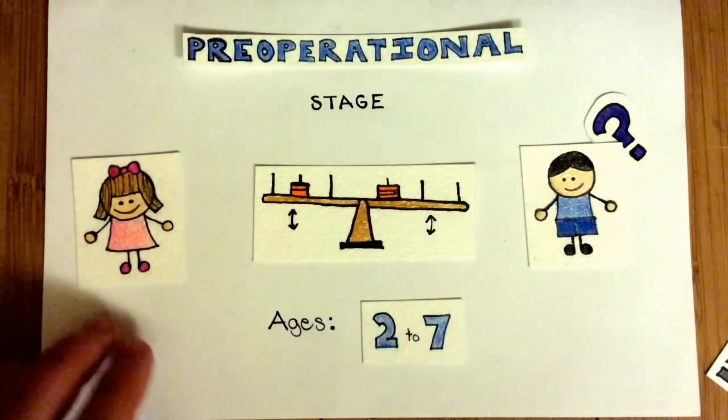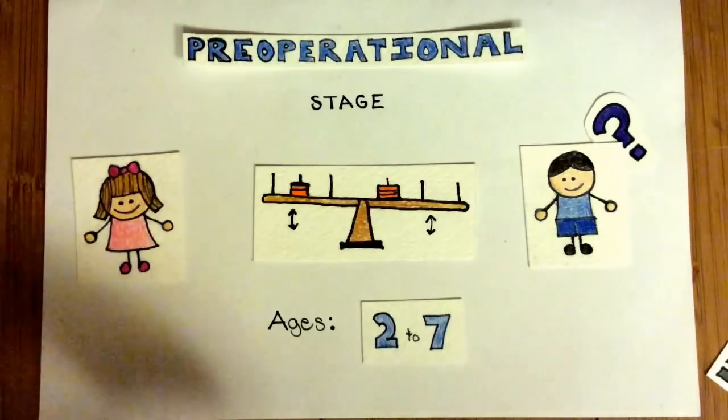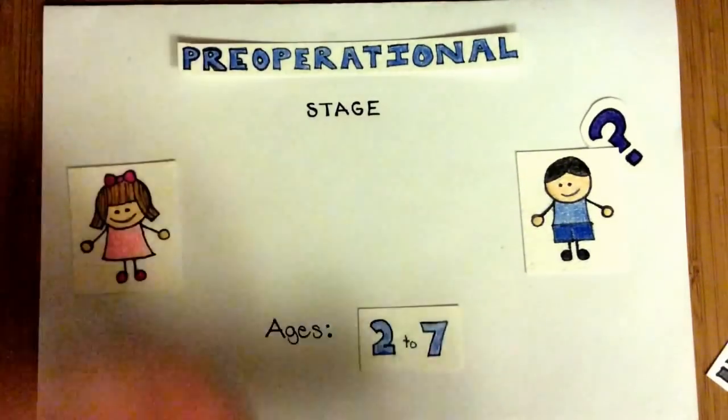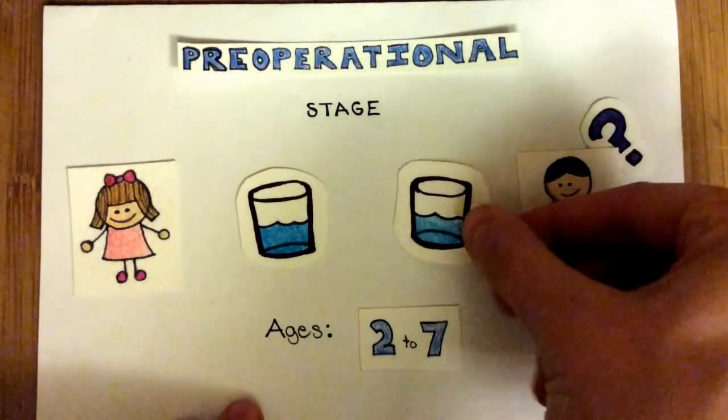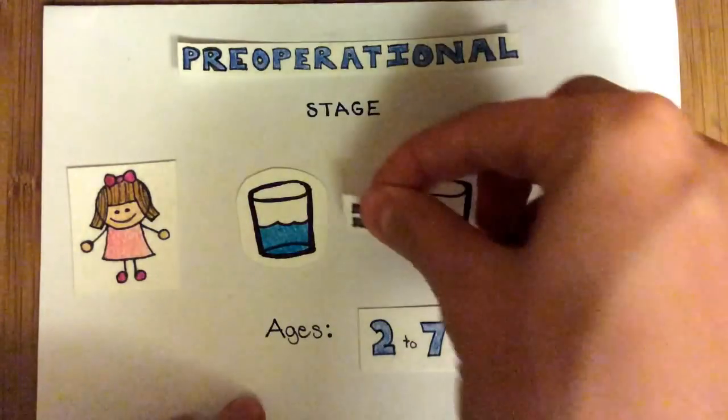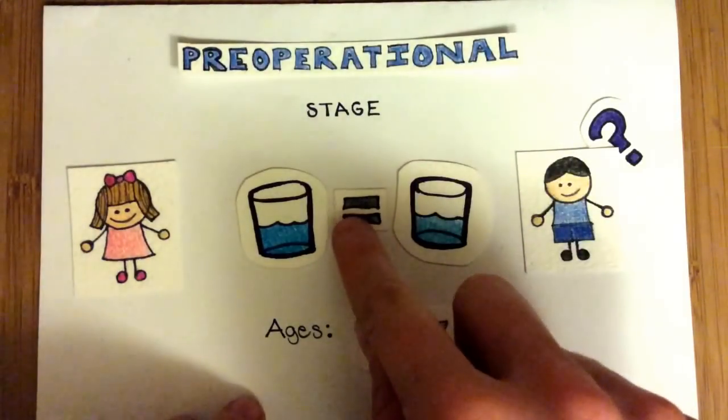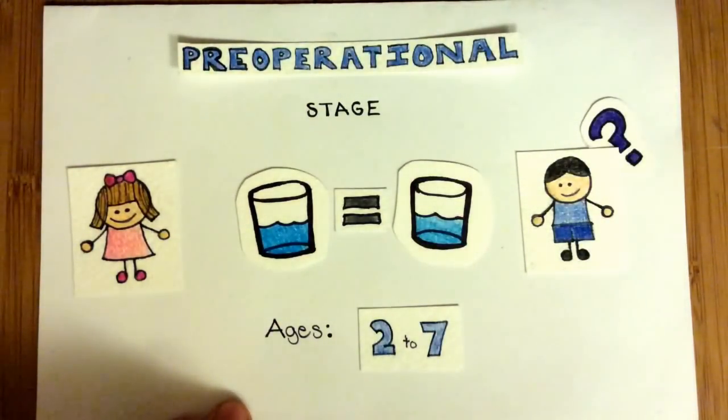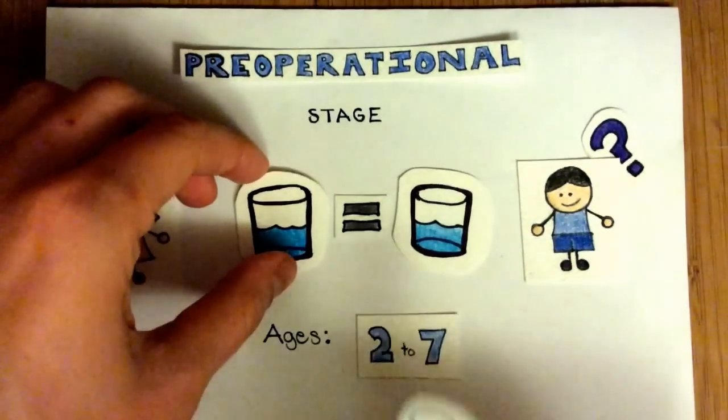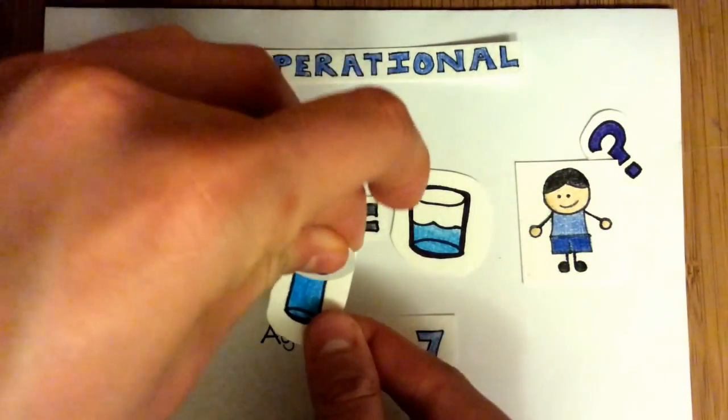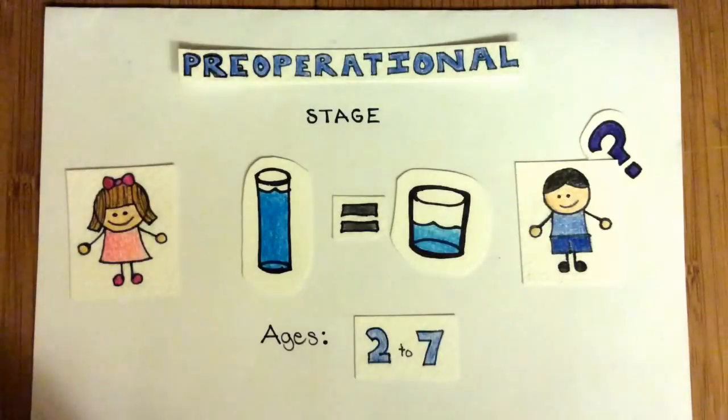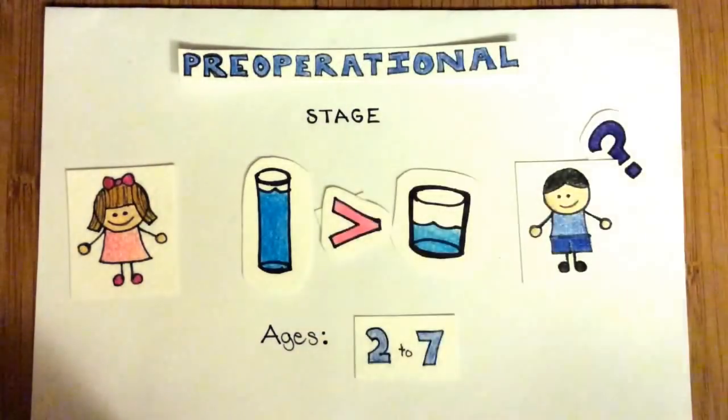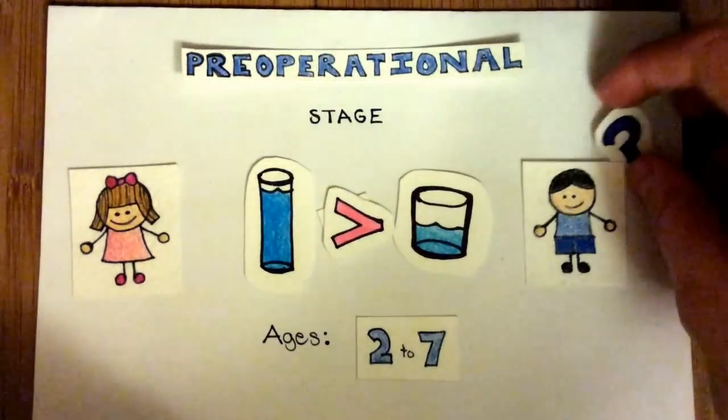Furthermore, children in the preoperational stage lack an understanding of the conservation concept. In experiments testing understanding of the conservation of liquid, a child is shown two identical glasses filled to the same level, which he or she correctly identifies as containing the same amount of liquid. As the child watches, the experimenter pours the liquid from one glass into a narrower, taller glass. Now, the child will state that the taller glass has more liquid, despite having watched the experimenter the whole time.